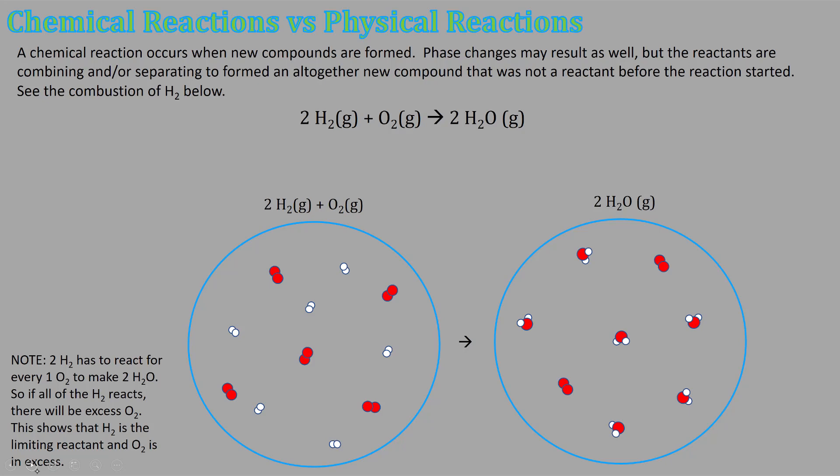A chemical reaction occurs when new compounds are formed. Phase changes may result as well, but the reactants are combining and/or separating. Here we have two H2s bonding with an oxygen to give us water vapor. The red molecules here are oxygen and the white ones are hydrogen.